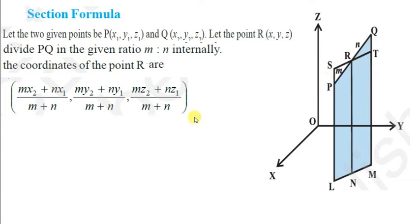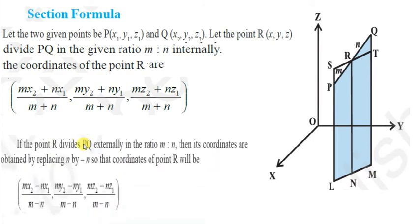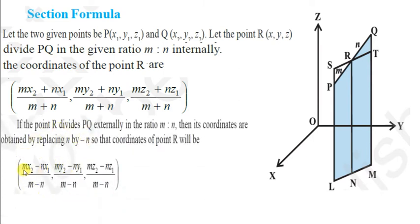We can find the coordinates of point R using the section formula as: x = (mx2 + nx1)/(m+n), y = (my2 + ny1)/(m+n), and z = (mz2 + nz1)/(m+n). If the point is dividing PQ externally in the ratio m:n, then the coordinates of R will be: x = (mx2 - nx1)/(m-n), and similarly for y and z coordinates, using minus instead of plus.